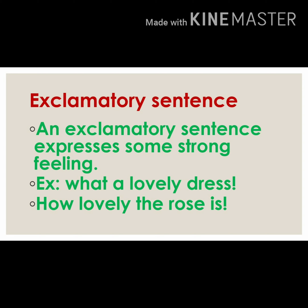The last kind is not given in class 4 but I want to explain it — that is the exclamatory sentence. An exclamatory sentence expresses some strong or sudden feeling. For example: 'What a lovely dress!' 'How lovely the rose is!' In an exclamatory sentence you can see an exclamation mark at the end, which makes it easy to identify. When you see something beautiful or feel something strongly, that expression is called an exclamatory sentence.